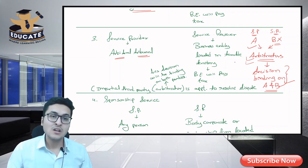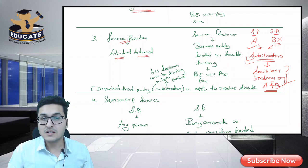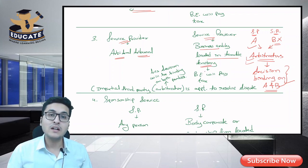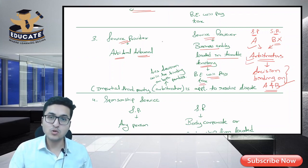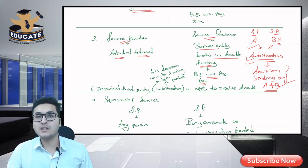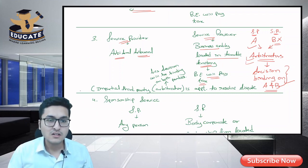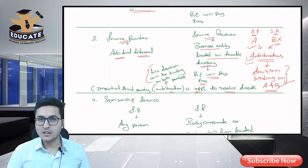So arbitration and arbitral tribunals are legally valid in India and are used to resolve small commercial disputes. In this case, the service provider is the arbitral tribunal, and the service receiver is a business entity located in taxable territory. So the business entity will pay the tax. Arbitration meaning: an impartial third party (the arbitrator) is appointed to resolve the dispute, and his decision is binding on both parties.